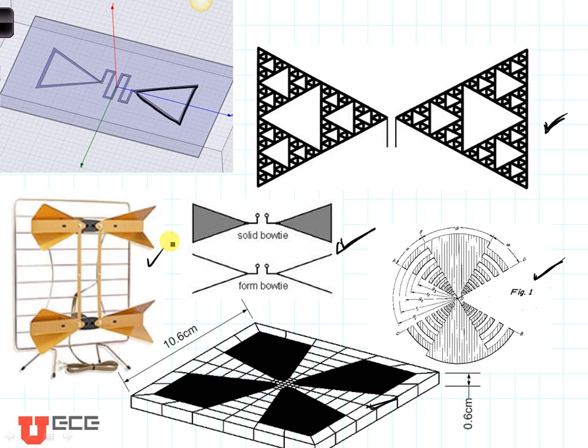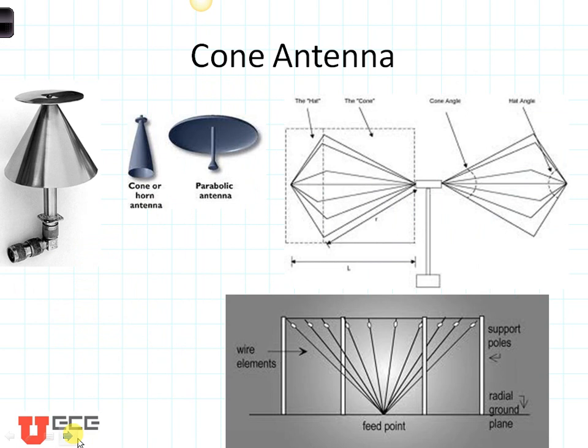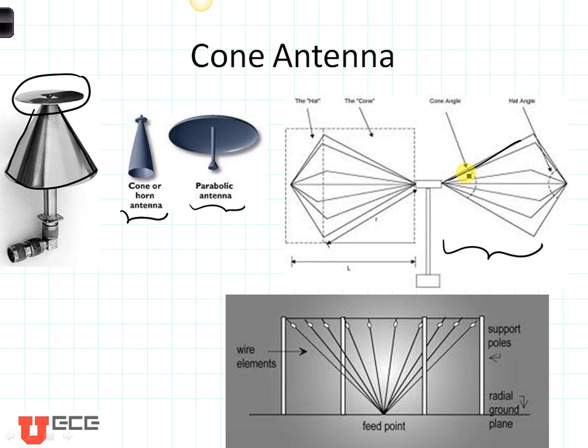The cone antenna is another type of broadband antenna. Here's a basic cone antenna, and this particular one has a disc on the top — that is a disc cone antenna. Here is a cone or horn antenna and a parabolic antenna as well. Here is a conical dipole antenna — the cone shape is produced just from wires and is often used for electromagnetic compatibility measurements. Down here we can see a simple cone antenna built from putting up several posts, running a wire between them, and then running several other wires up from a single feed point on the ground.